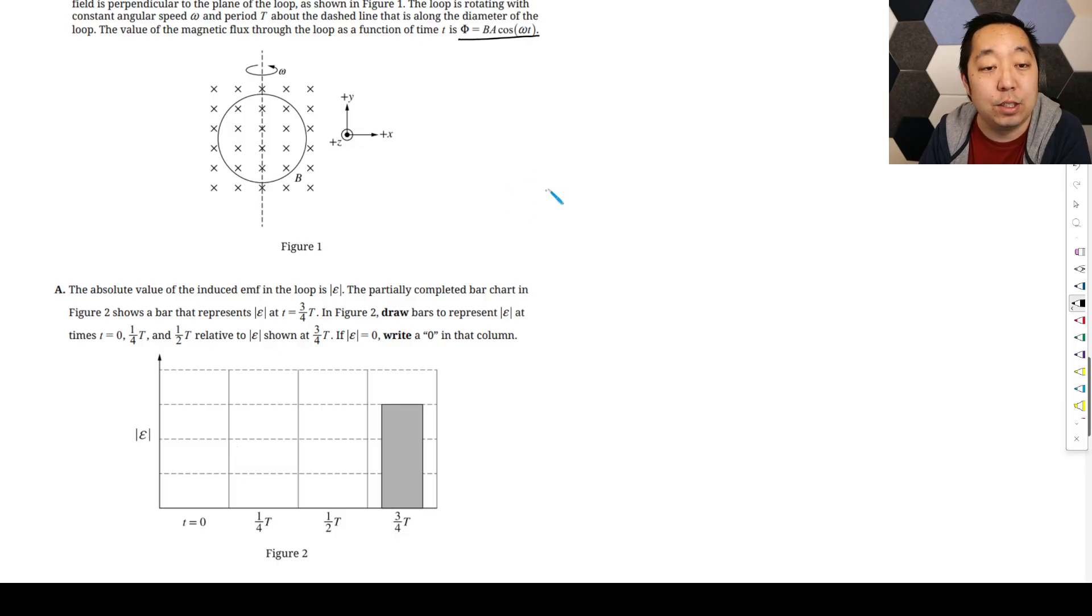This is going to be sinusoidal because to get the induced EMF we take the derivative, the rate of change of the flux. Notice I don't put the negative sign because I just care about the magnitude of the EMF at this point.